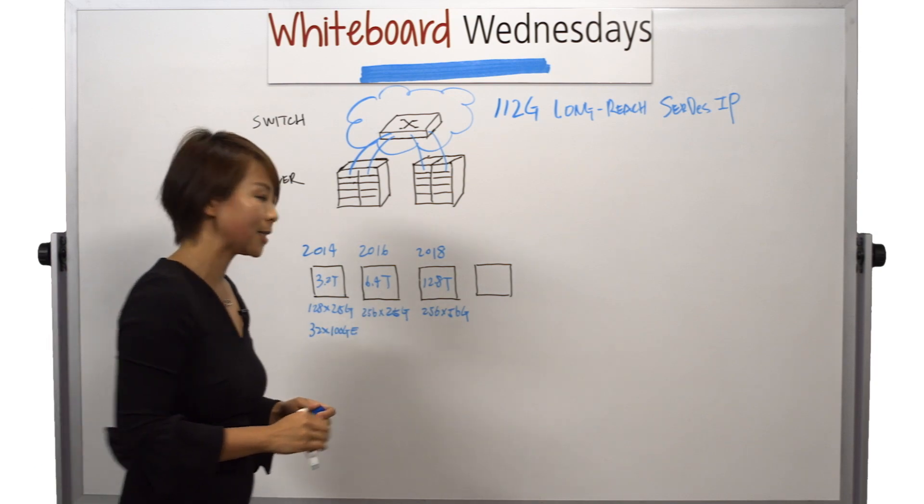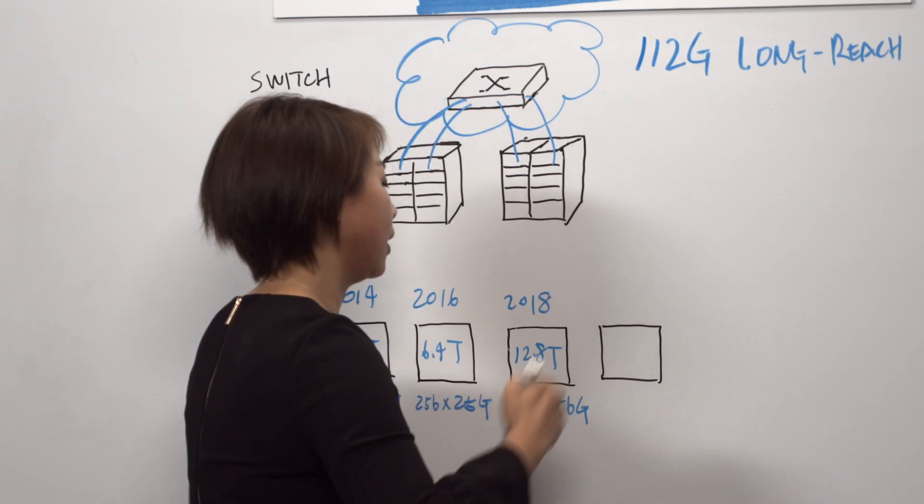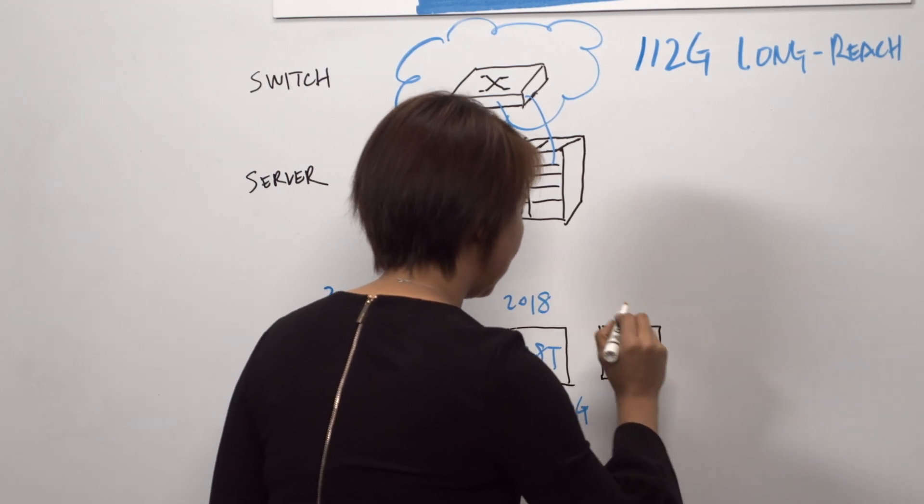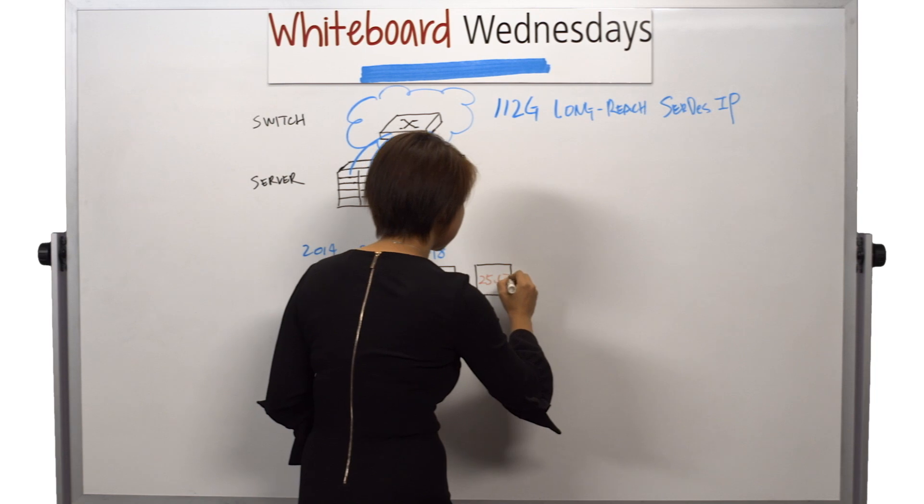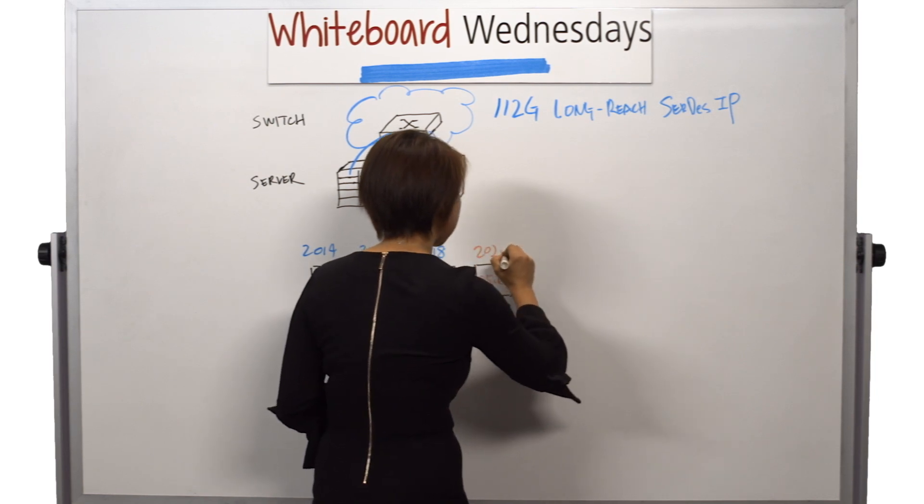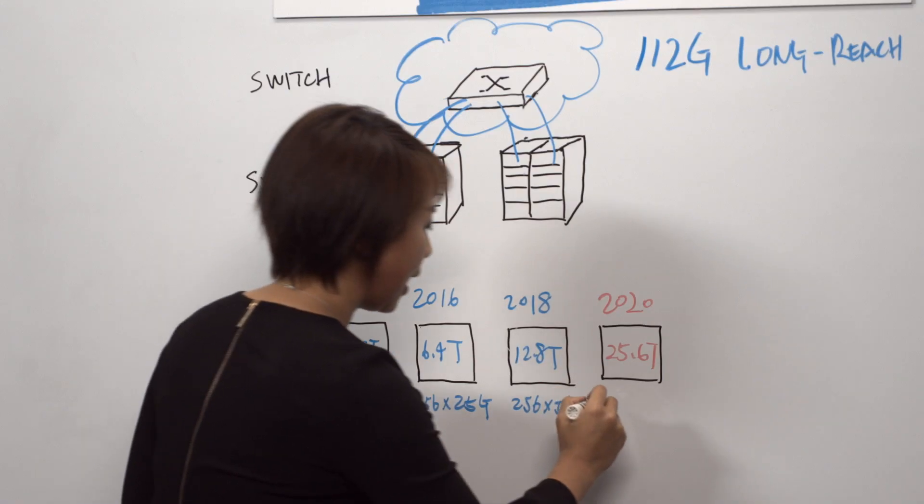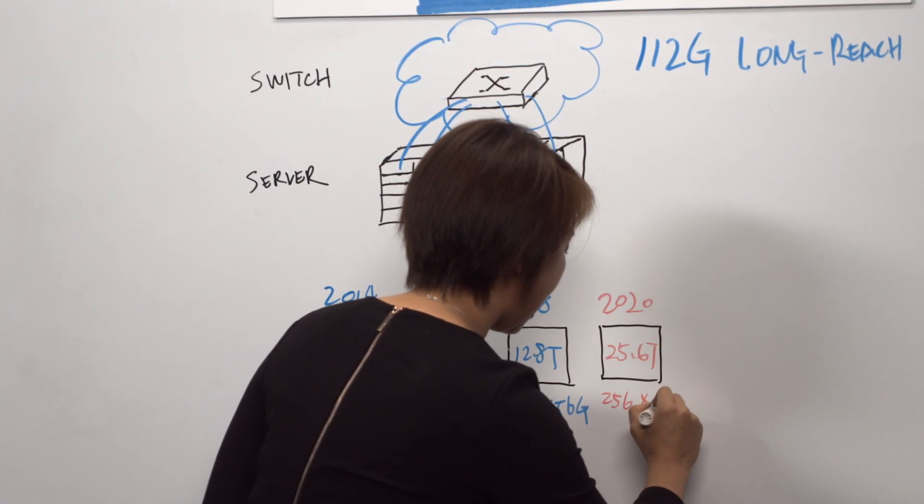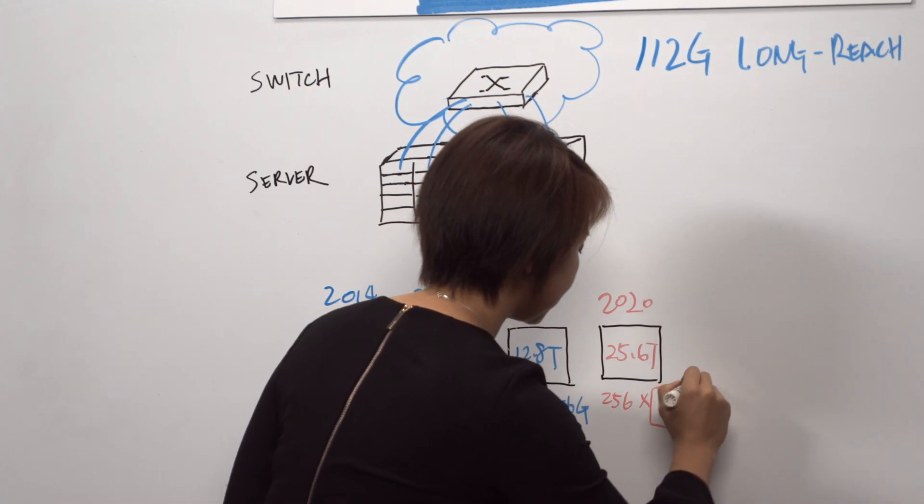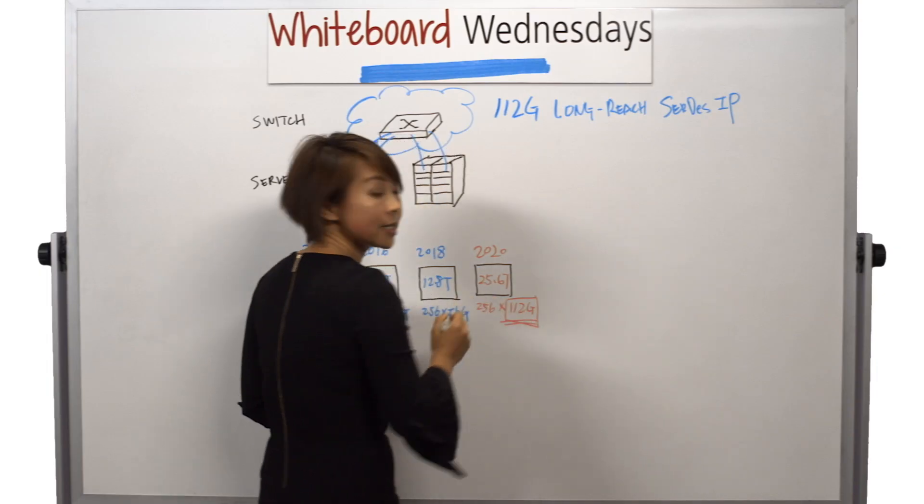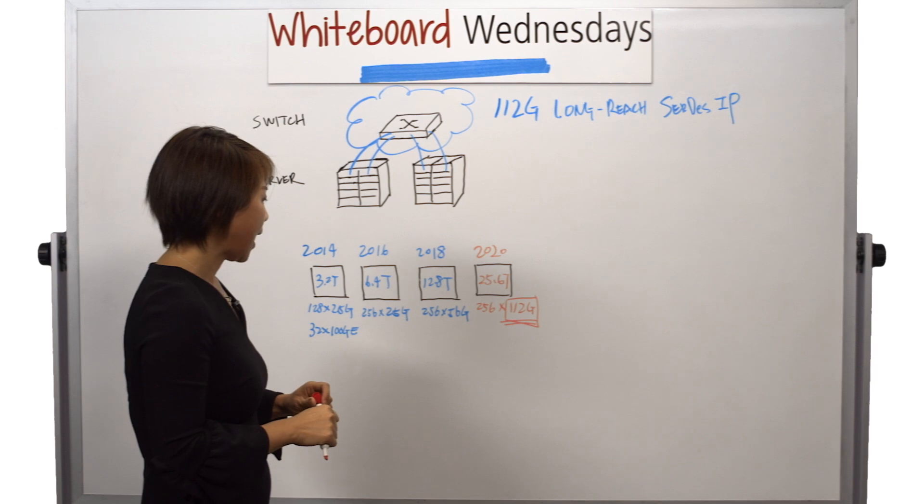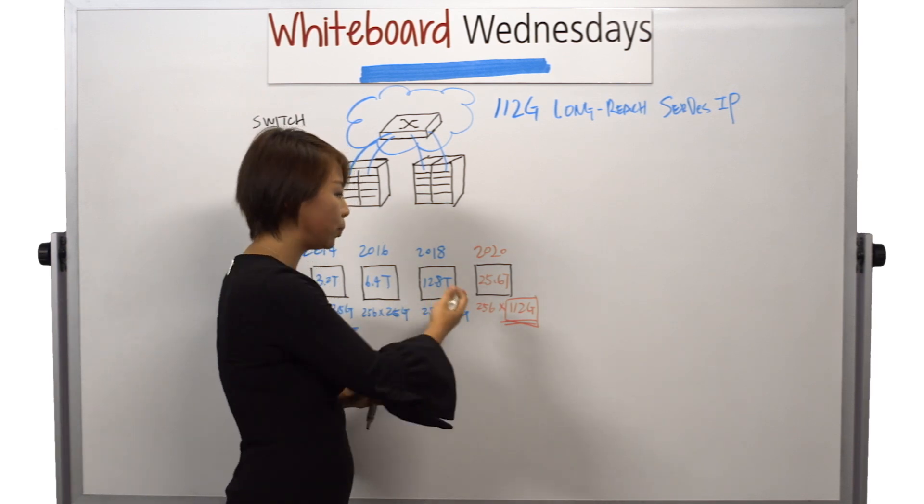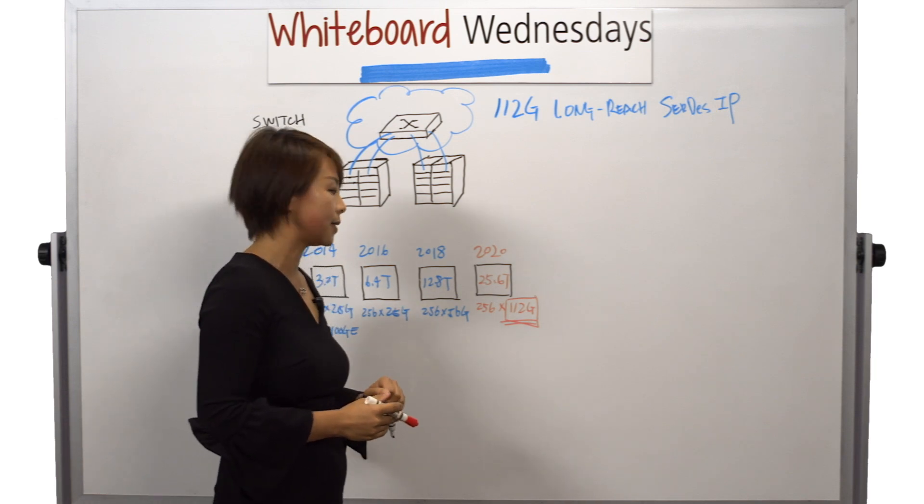The next one we will see would be a 25.6 terabit switch, likely around 2020. And this one will need 256 of 112G SerDes. So that's our product right there. And with this IP, we'll enable our customers to build this next generation switch ASIC.